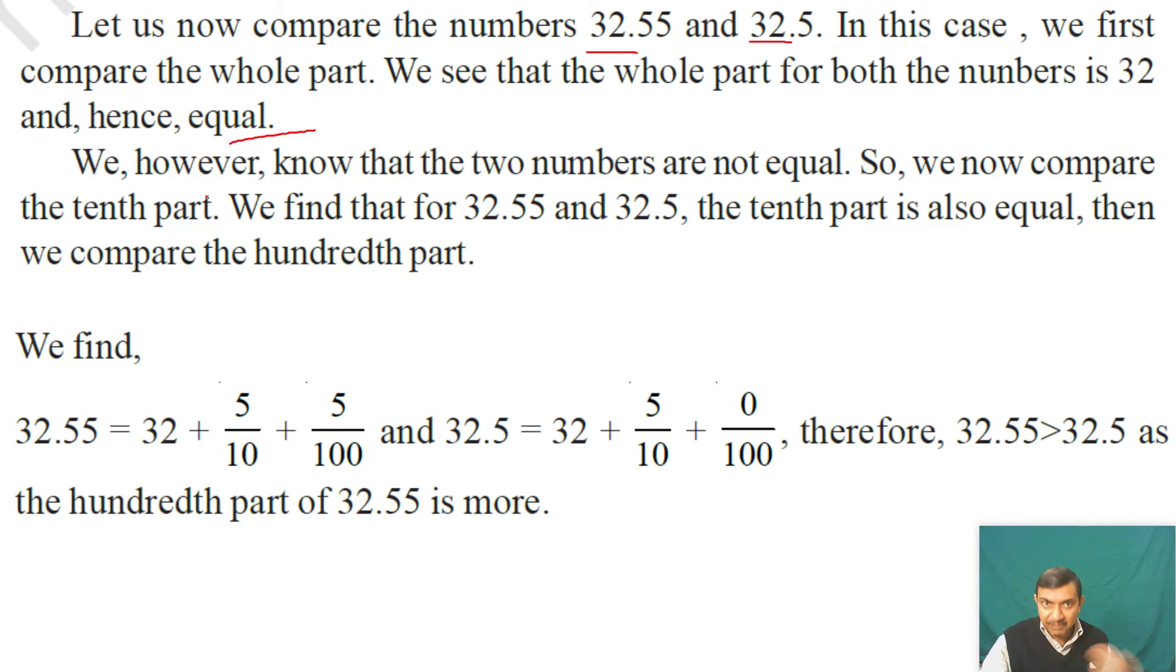We know that the two numbers are not equal. So we now compare the tenth part. For both 32.55 and 32.5, the tenth part is 5, so they are equal. Then we compare the hundredth part. For 32.55, the hundredth part is 5, but for 32.5, there is no hundredth part, so it is 0.